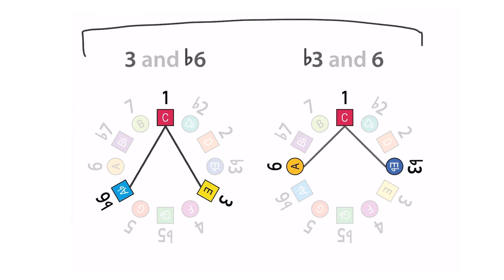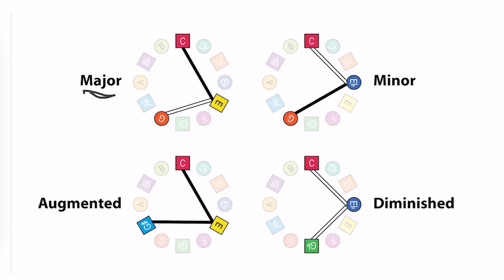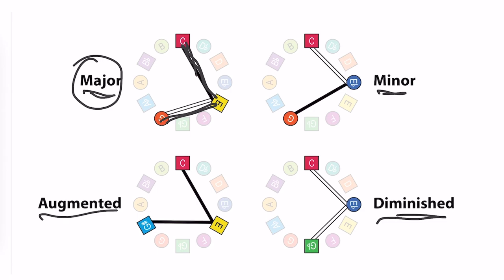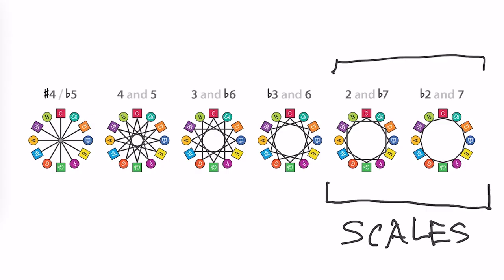Looking at intervals of three and six — major three and flat six, or flat three and major six — in other words, triangles and squares, this is where chords are formed. These are the intervals that form chords. For example, looking at basic triads, which are three-note chords: the major chord is a major third and a minor third, or part of a triangle and part of a square. The minor chord is part of a square and part of a triangle. The augmented chord is made up of two major third intervals — part of a triangle — and really the augmented chord itself is a triangle. A diminished chord is made up of two minor third intervals, which are part of a square. So while intervals of two and seven make up scales, intervals of three and six make up chords.